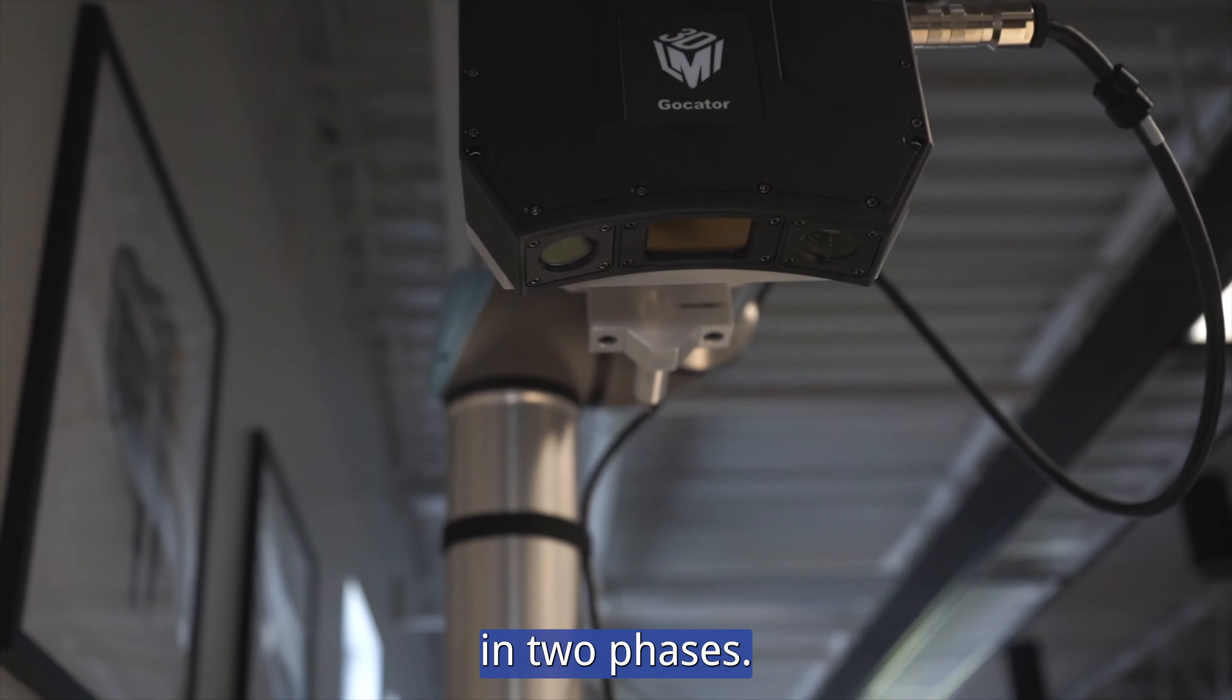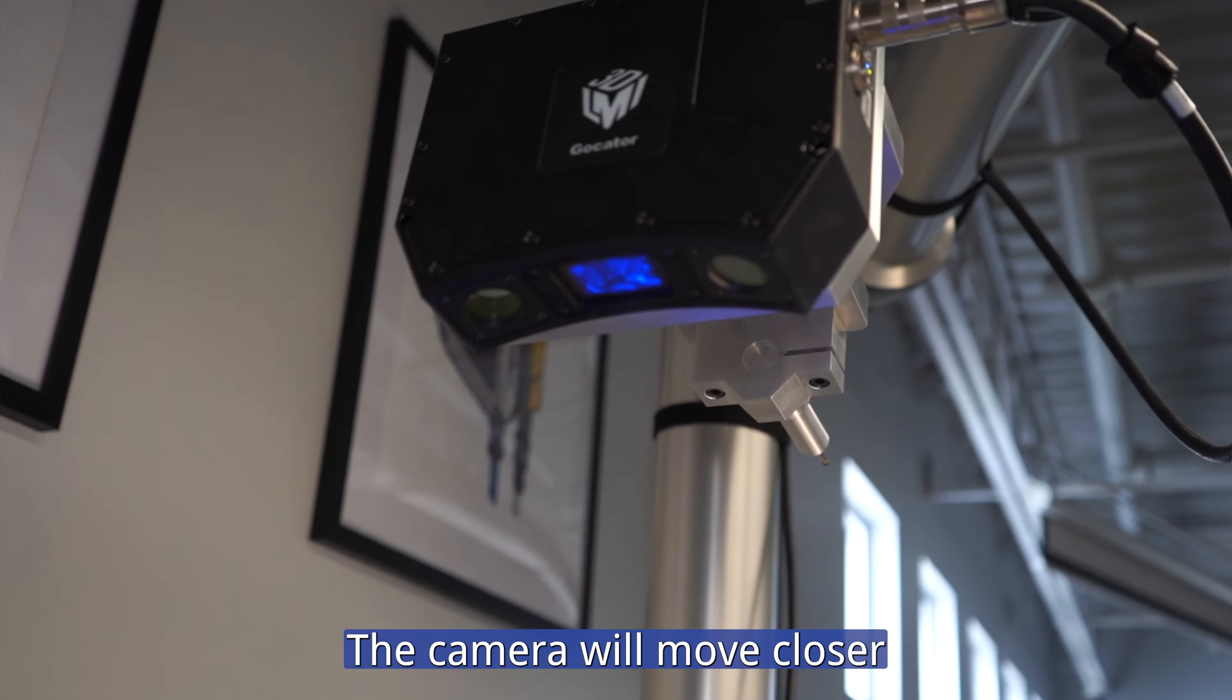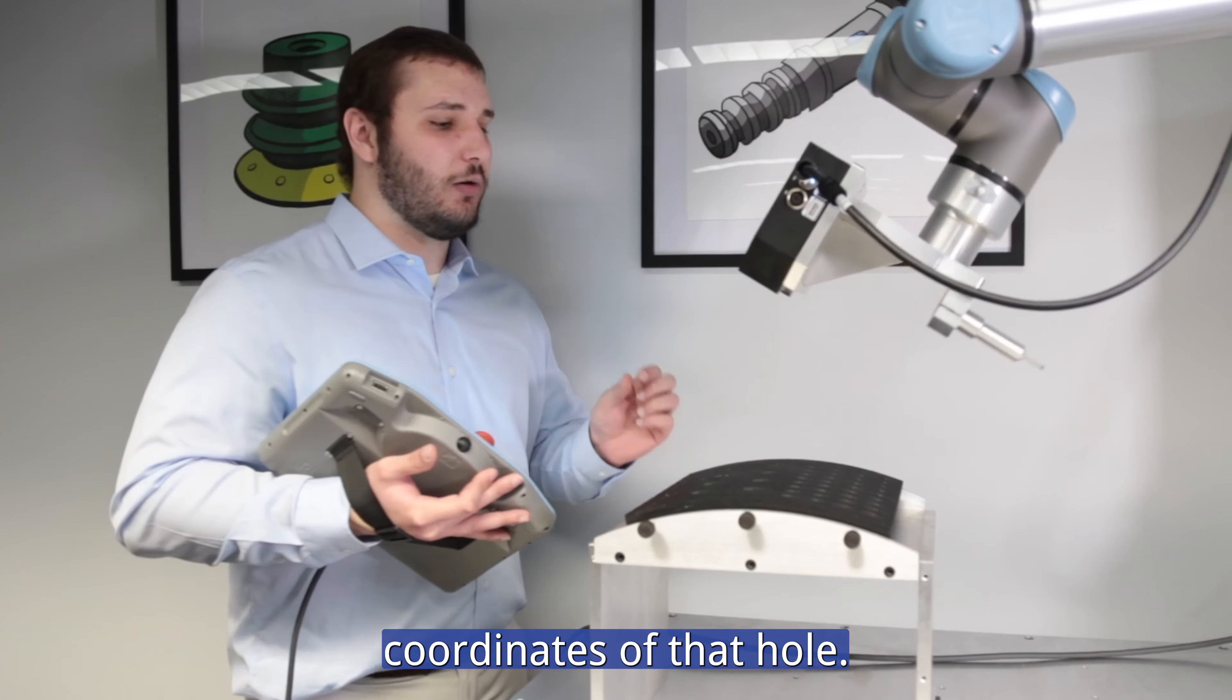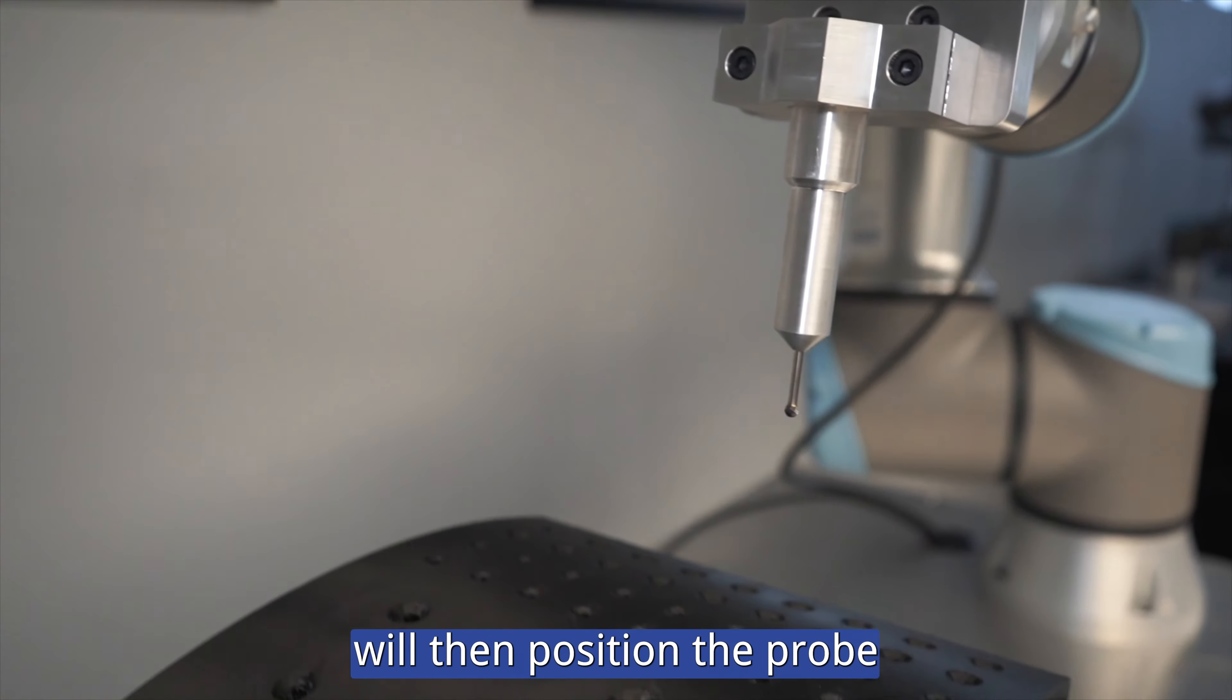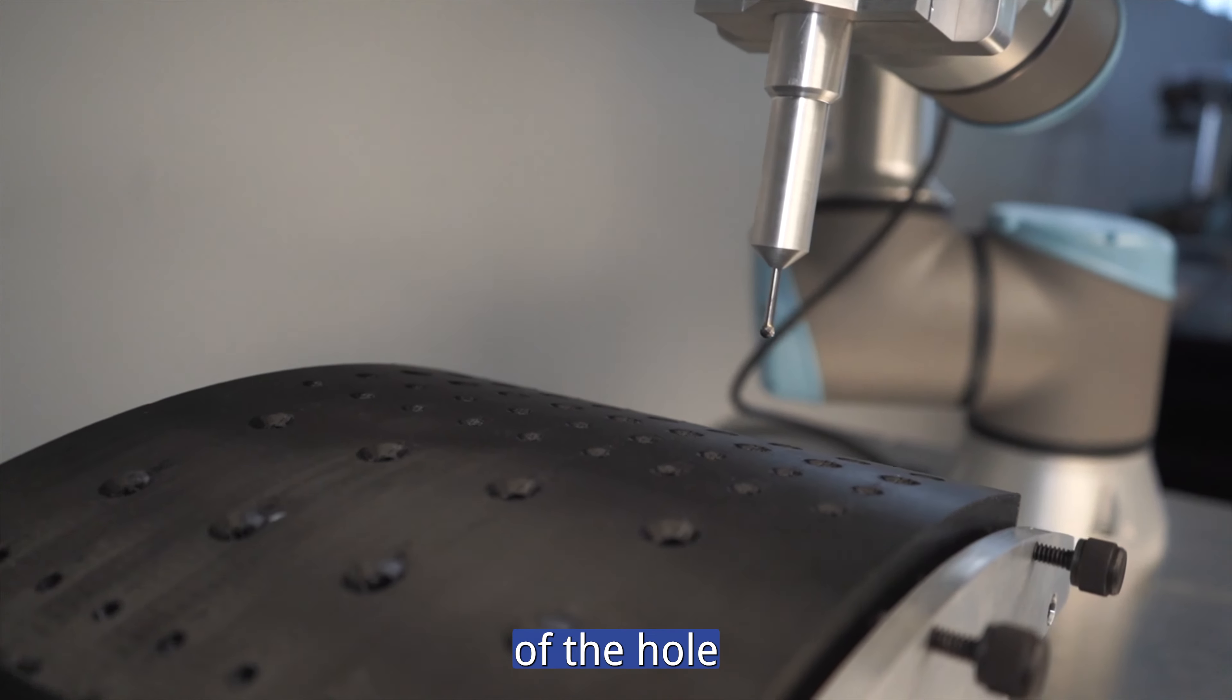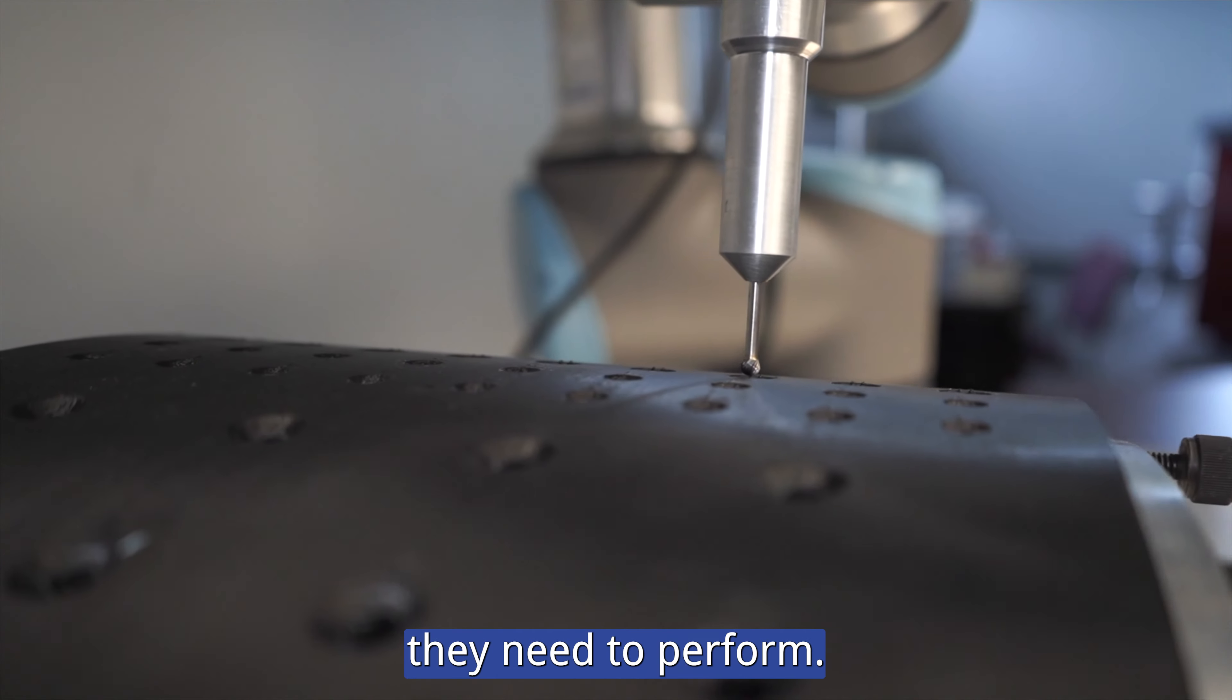The second phase is the fine phase. The camera will move closer to a singular hole and identify the exact X, Y coordinates of that hole. From there, the robot will then position the probe in the exact center of the hole where they can perform whatever action they need to perform.